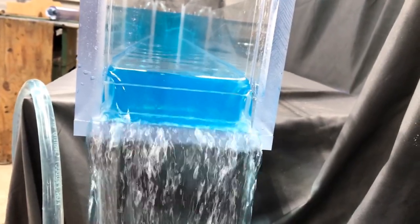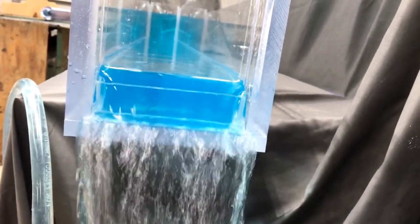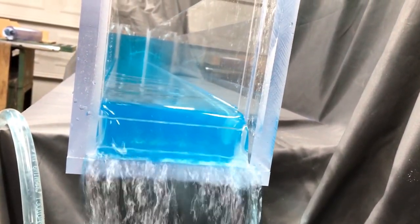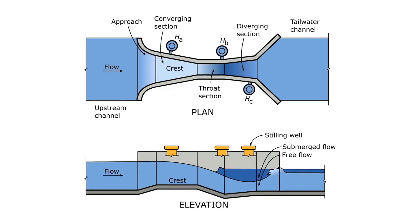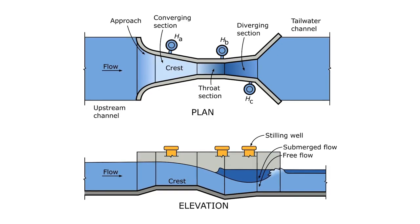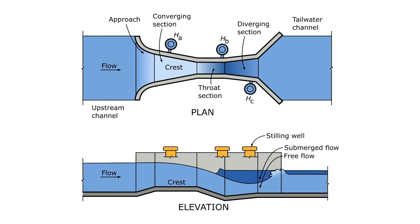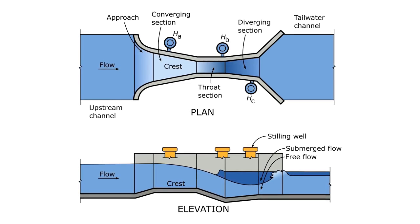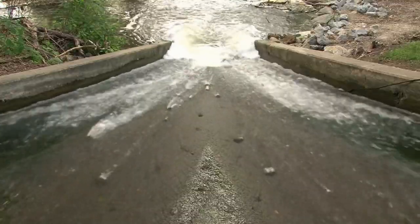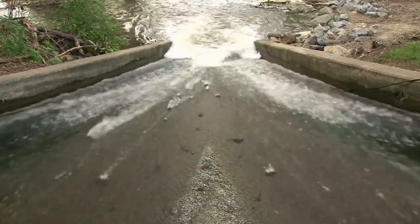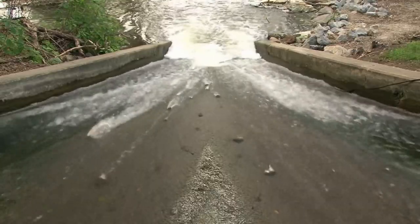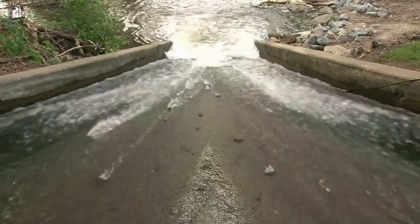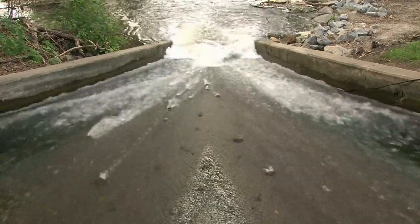A flow profile can naturally transition from subcritical to supercritical — that is, from slow to fast. For example, if a channel changes to a steeper slope or a cliff. Many types of flow measurement devices rely on forcing a flow to transition from sub to supercritical because there will be a unique relationship between the flow rate and the depth for a given geometry. But when flow transitions the other direction — when a fast moving supercritical flow transitions to a more tranquil, subcritical condition — something much more interesting happens: a hydraulic jump.